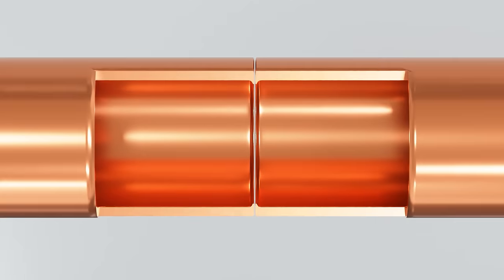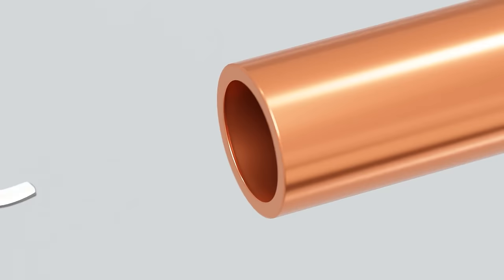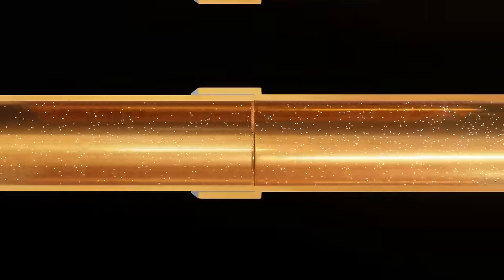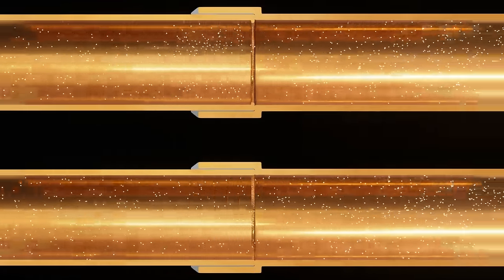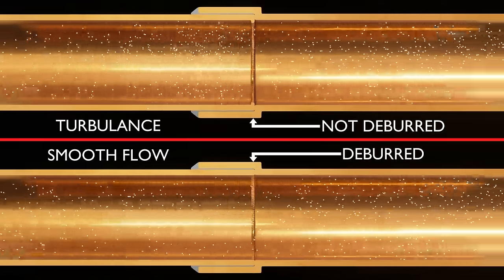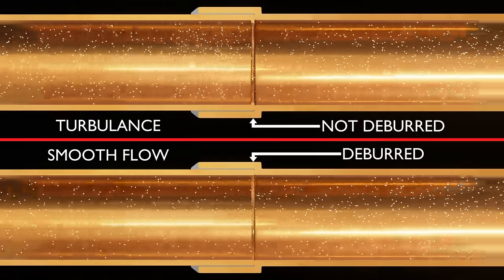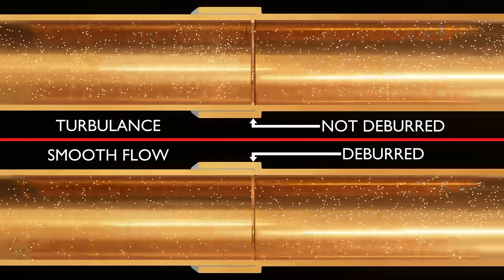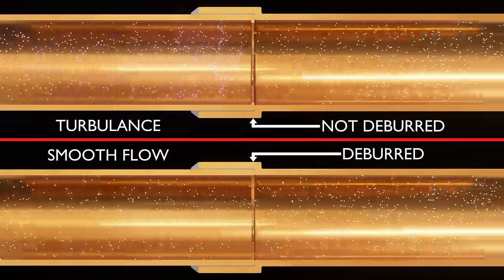This burr can create turbulence if left in place. Use the deburring tool to remove the burr and ensure that burr or particles do not fall into the tubing. Some techs in critical situations will opt to use needle-nose pliers, inserting them into the tube and twisting back and forth rather than risk dropping shavings into the tubing with a deburring tool. Use your judgment and your own company policies where these situations might apply.